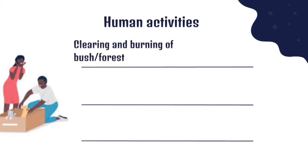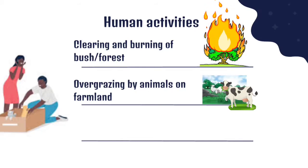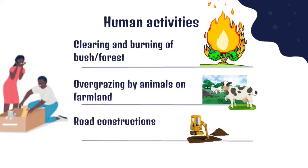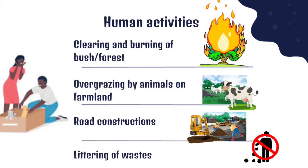Now let's look at the first one: clearing and burning of bush and forest. When we burn bushes every time, it causes erosion because there is nothing to hold back the wind. There is nothing to hold back the rain from hitting the soil directly. Another reason is overgrazing by animals on farmland. When we carry our animals to graze, we don't allow this grass to grow again and we keep bringing our animals. Before you know it, there will be no grasses to stop the rain from hitting the soil directly. We have road construction, just like we talked about earlier, without proper drainage it causes erosion. And we have littering of waste. Instead of us disposing our waste in the right place, we just litter it around. This is not good because it's causing erosion.